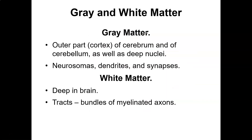Gray versus white matter: gray matter is the outer part — the cortex of the cerebrum and cerebellum, as well as the deep nuclei. It includes the neurosomas, dendrites, and synapses. White matter is deep in the brain — those are the tracts, the bundles of myelinated axons.